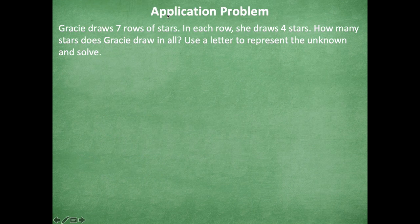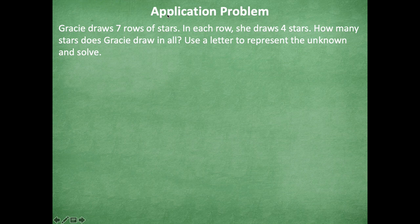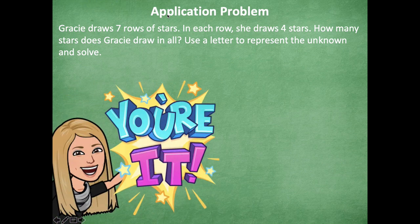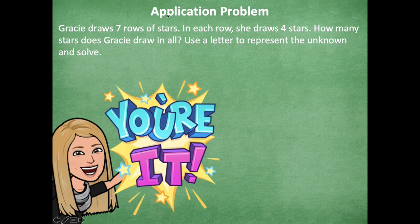All right, so let's start with our application problem today. Gracie draws seven rows of stars. In each row she draws four stars. How many stars does Gracie draw in all? Use a letter to represent the unknown and solve. So your turn, you guys are going to solve your application problem on your dry erase board and then click play when you're ready to go over it together.